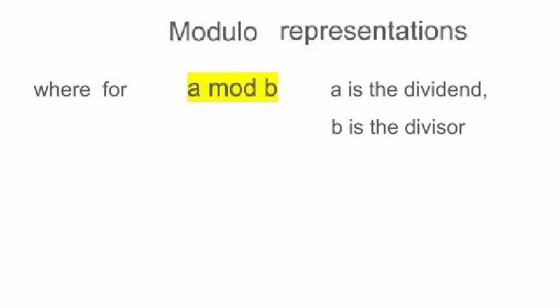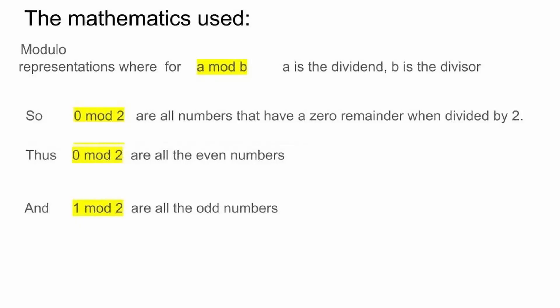Most of the mathematics I use in this attempted proof is nothing unusual. However, something a bit different which some of you may not be familiar with is I'll be using modulo representation, where for A mod B, A is the dividend and B is the divisor. So for example, 0 mod 2 are all the numbers that have a 0 remainder when divided by 2 — thus all the even numbers. And 1 mod 2 are all the odd numbers.